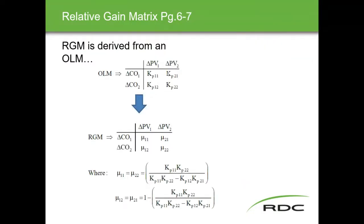To develop the relative gain metrics we have to start with an open loop matrix. The open loop matrix is found by determining the static gains of the individual loops. We made a 10% change in CO1 and recorded the effect on PV1 and PV2, then put them over each other using the output-over-input formula. That gives us individual static gain values to plug into the formula, which gets converted into the relative gain metric matrix — filling it in using the 11/22 formula and the 12/21 formula.